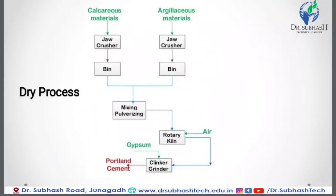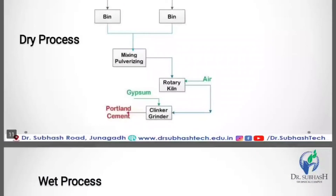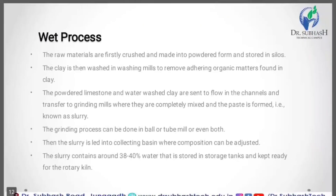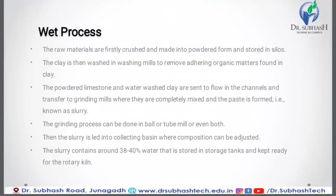These two powdered minerals are mixed in the required proportion to get a dry raw mix, which is then stored in a silo and kept ready to be sent into the rotary kiln. Before the rotary kiln, this material is stored in the silo. The raw materials are mixed in specific proportions so that the average composition of the final product is maintained properly. The second mixing method is the wet process.